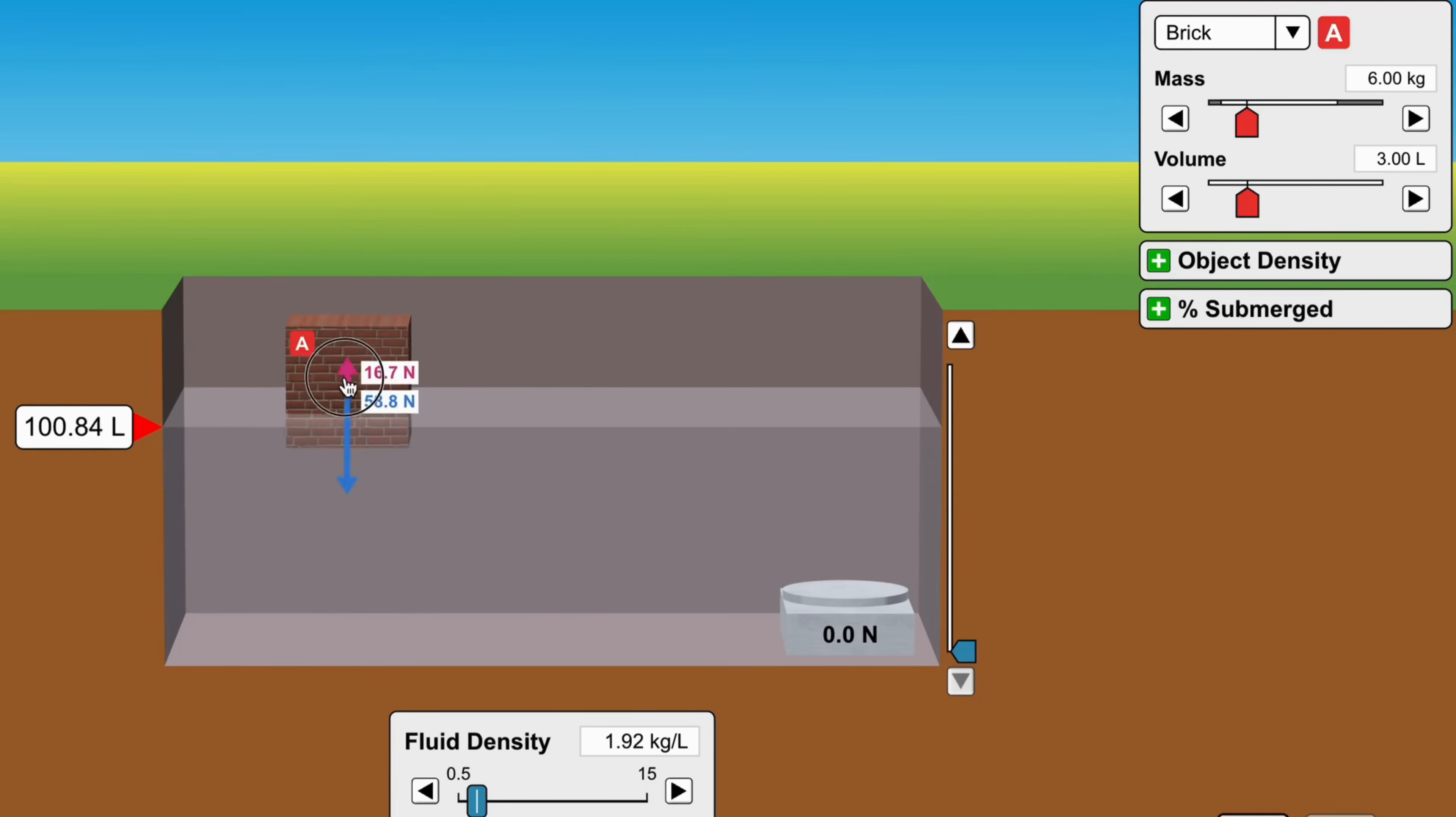This leads us to the idea of floating and sinking. If the buoyant force acting on an object is less than the weight of the object, the object sinks. If the buoyant force is equal to the weight of the object, the object floats in equilibrium. If the buoyant force is greater than the weight of the object, the object rises upward until balance is achieved.